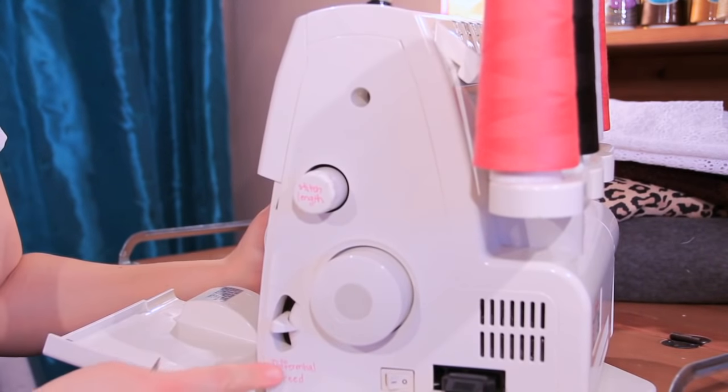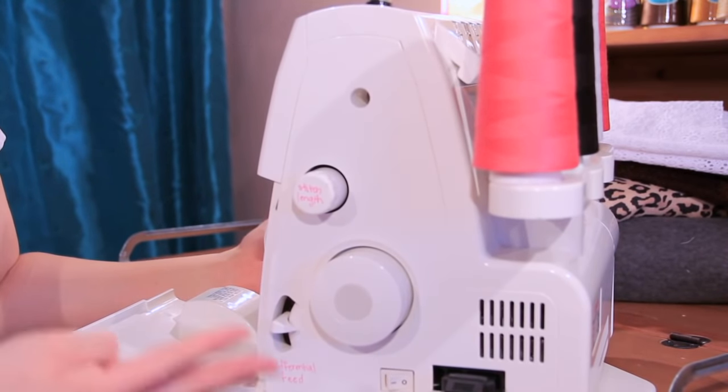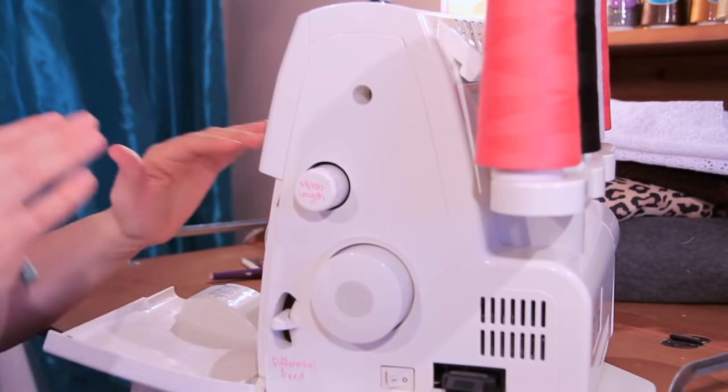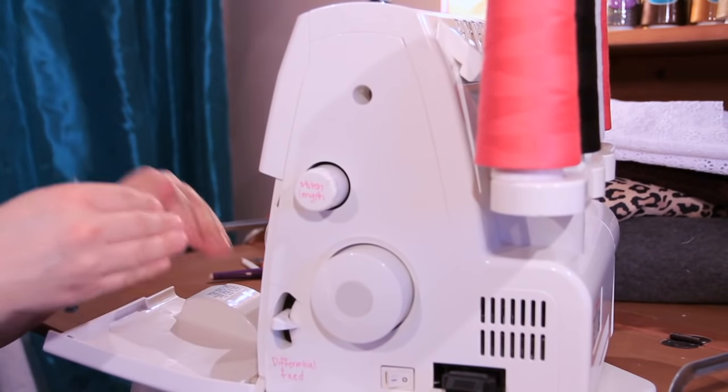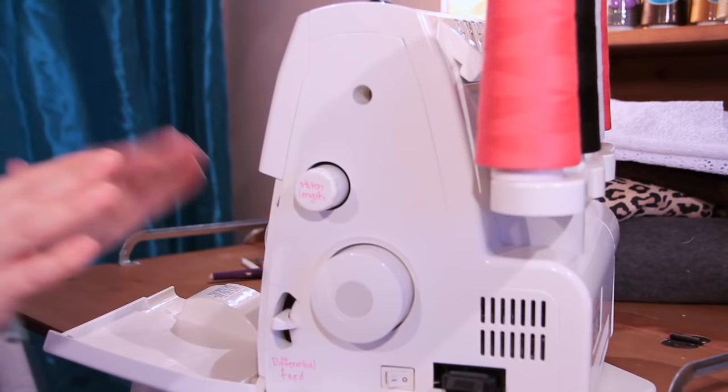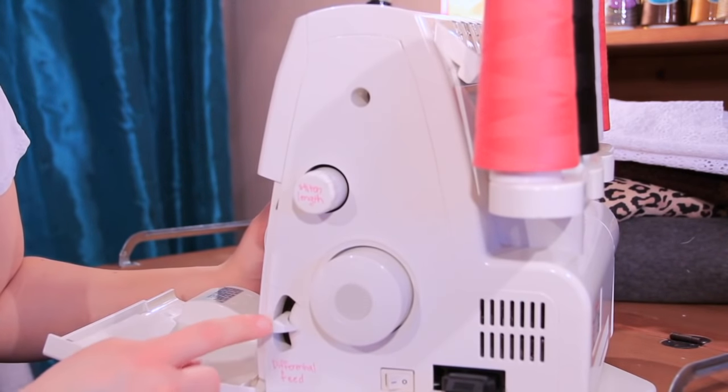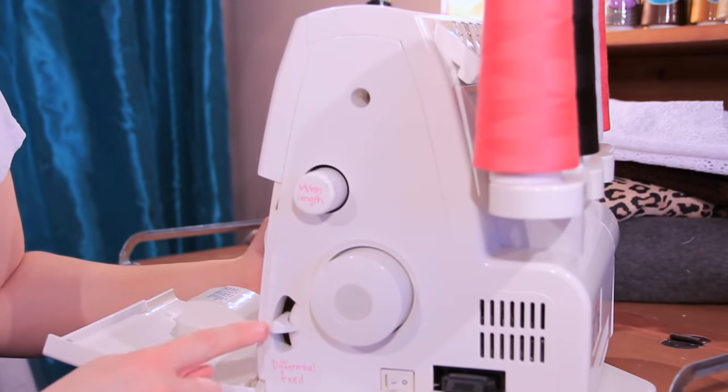Differential feed down here. This basically is your feed dogs and what it does is it changes the rate at which your fabric is pulled into the machine but we can get into that a little bit later. Just know that it's there and your go-to automatic is a 1 unless you're trying to make gathers or do lettuce edges, all that fun stuff.